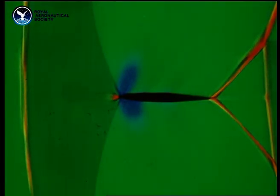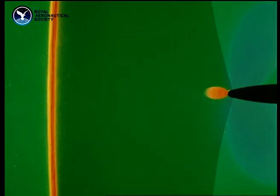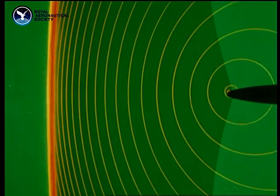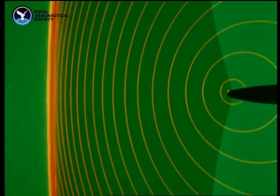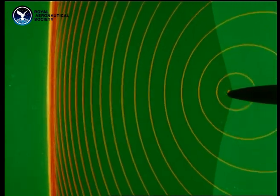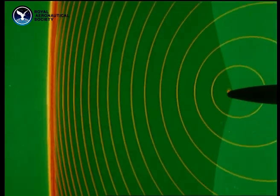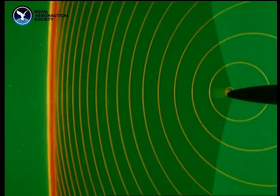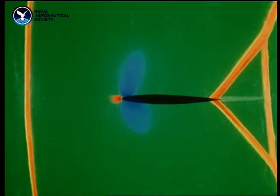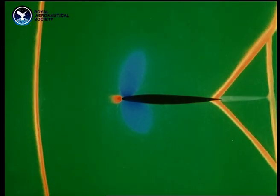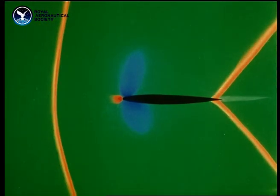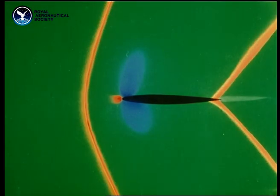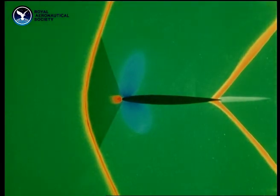The supersonic regions are lighter green. Like the shock waves on the wing, the bow wave is formed by the constant piling up of pressure waves — this time from points near the leading edge inside the subsonic region. As speed increases, the bow wave comes in quickly towards the leading edge, but there's still a subsonic region in between.